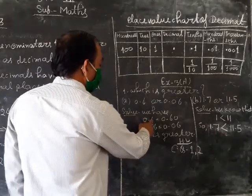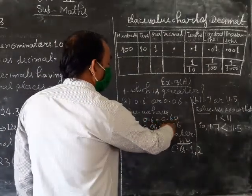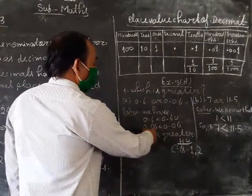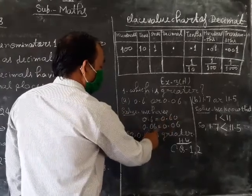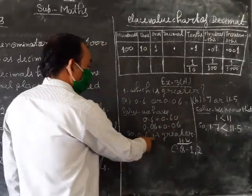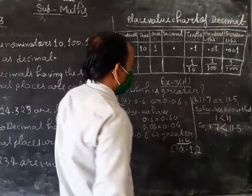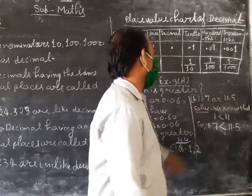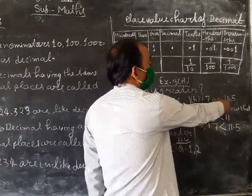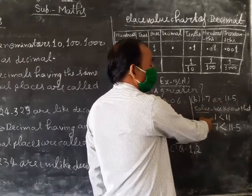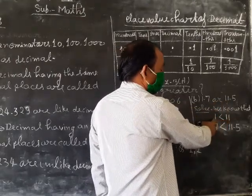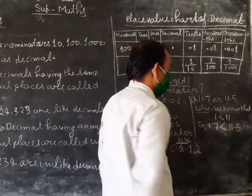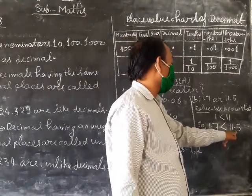0.6 is greater. Also, 1.7 is less than 11.5.